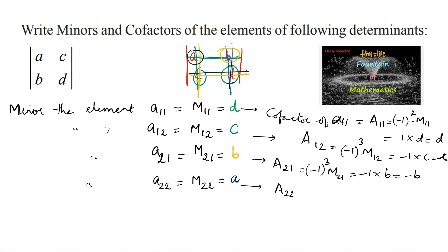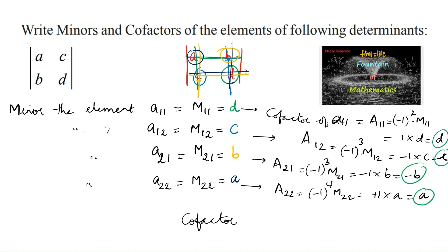And next, A22: (-1)^(2+2) = (-1)^4, and M22. The minor of the element is A, so we can write (+1) into A, which equals A. So, we can conclude: the cofactor elements are D, minus C, minus B, and A. And we can write the cofactor matrix as [D, -C; -B, A].